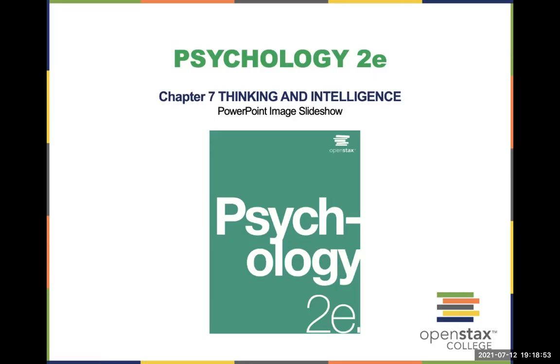Good evening everyone. This is Chapter Seven: Thinking and Intelligence from the Psychology second edition textbook published by OpenStax.